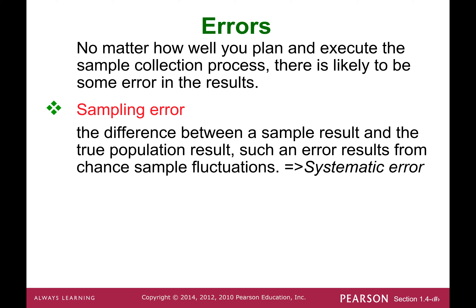Anytime you conduct a research study using a sample, there is always an error involved. No matter how well you plan the sampling collection process, there is likely to be some error in the results. The first is sampling error, which is also a systematic error — meaning you cannot avoid it. No matter how good your sample is, the difference between the sample result and the true population result still exists, because a sample is never as good as the population itself.